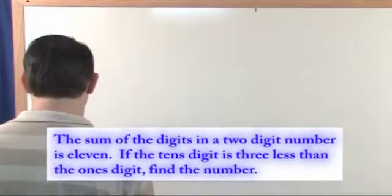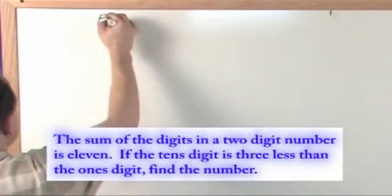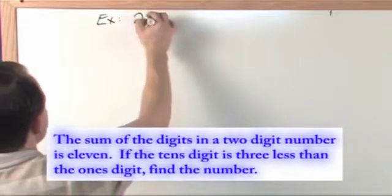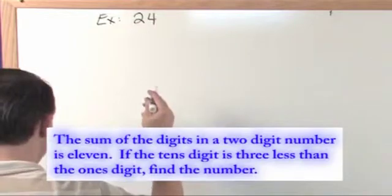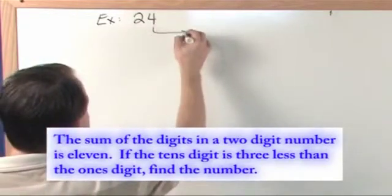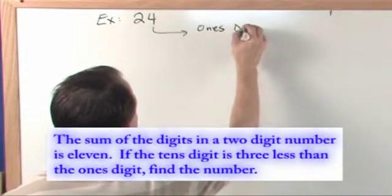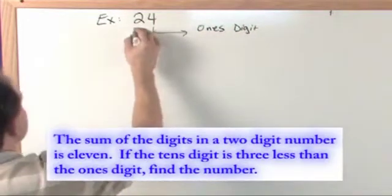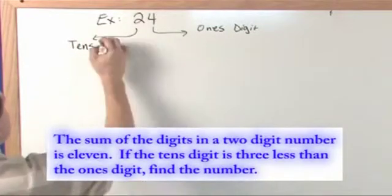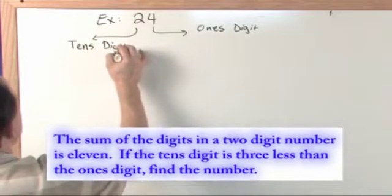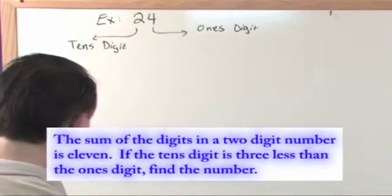First thing we're going to do since we're talking about this, I'm going to talk a little bit about tens digit and ones digit. So if we have the number 24, we'll tell you something that you probably already know. This digit is going to be called the ones digit. And this digit is called the tens digit. And if I had a number in front like three hundred and twenty-four that would be the hundreds digit and so on and so forth, this is stuff you already know.